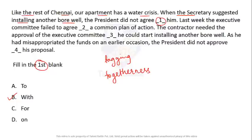If the president agrees with him, both are together. 'The president did not agree with him' means the secretary suggested something and the president is not accepting it. 'For' gives a goal or purpose, 'on' means on top of something, and 'to' gives direction — but togetherness is only denoted by 'with.'